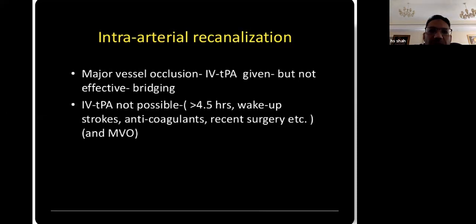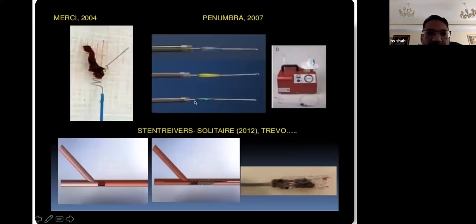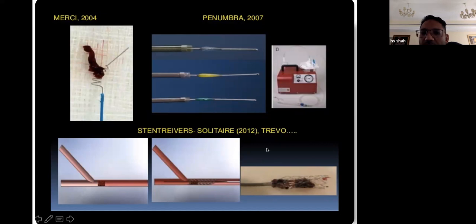Intra-arterial recanalization is for major vessel occlusions. In some patients, intravenous treatment is not possible. Guidelines state: if patients are more than 4.5 hours out, do not give intravenous TPA. If patients wake up with a stroke and the last known well time is unknown, it's suggested not to give TPA. Patients on anticoagulants, with recent surgeries, or with major vessel occlusions are also not candidates. The penumbra represents the difference between blood flow and blood volume. Current devices include the Merci device as first generation and then the stent or retrievable stents as the main options — stent retrievers and suction, or sometimes a combination.